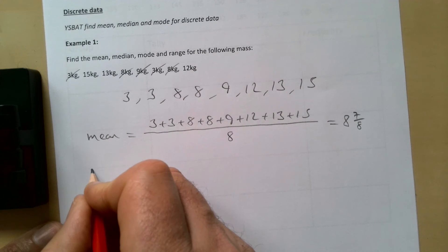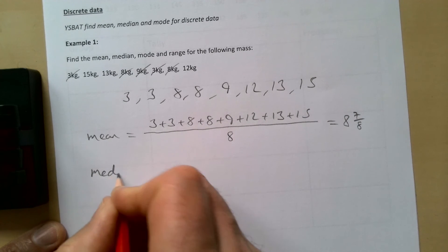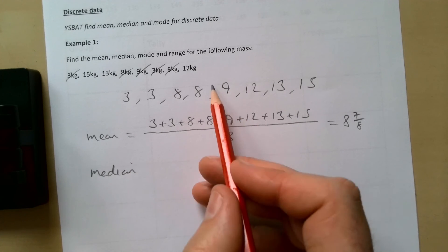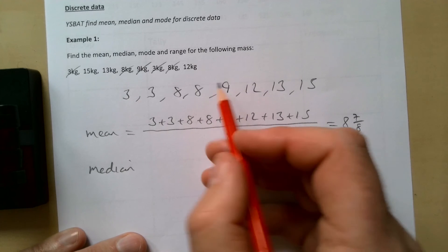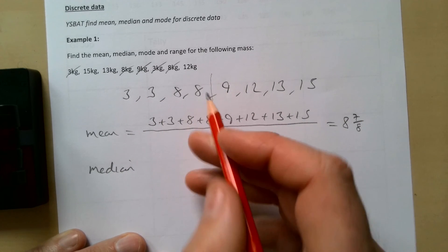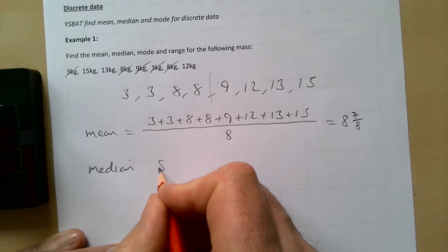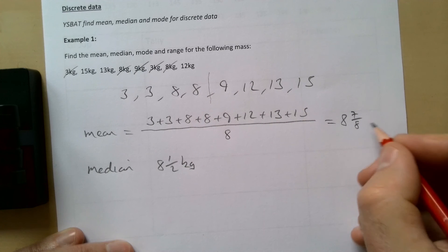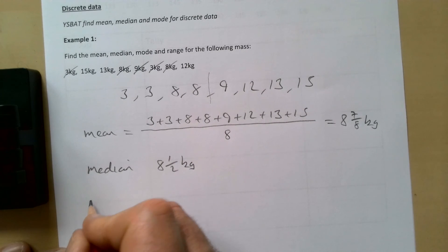The median is next. So we put the data in order - we've done that - and we find the middle one. For an even number of numbers there isn't a middle one, however it's between 8 and 9, so it's going to be 8 and a half kilograms. Of course, you should have a unit up here as well.